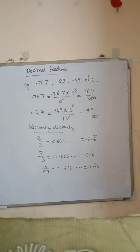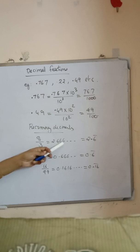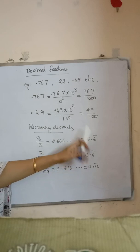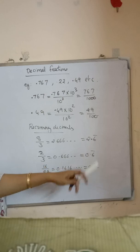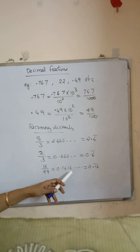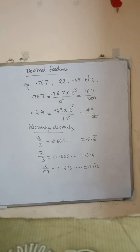Next are recurring decimals. If in a decimal, some digits or a set of digits are repeated continuously, those are called recurring decimals. For example, 8 by 3 equals 2.666... which is written as 2.6 bar, where the bar represents 6 is repeating. Also, 2 by 3 equals 0.6 bar. And 16 by 99 equals 0.1616..., where 1 and 6 repeat, so we write a bar over 1 and 6.